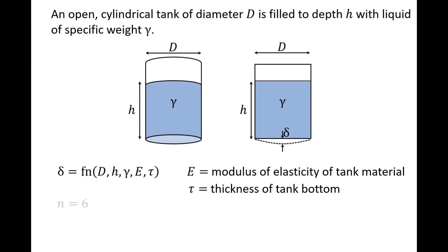The number of variables in this problem, n, is 6. In order to determine the number of pi groups required to study this system, we need to find the number of reference dimensions.